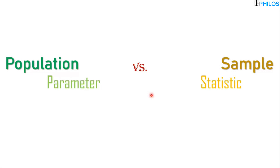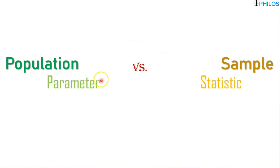Hi everyone, welcome back to our statistics series. In the last video we learned what statistics is, its importance in various fields, branches of statistics, and some key terminologies. In the key terms we looked at population and sample. In this tutorial I want to use examples to show you the difference between population and also the difference between parameter and statistic.